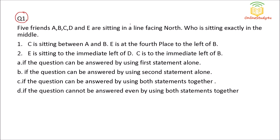Let us start with question number one, which is from reasoning. This question is from the topic sitting arrangement, and it is in the form of data sufficiency. Five friends A, B, C, D and E are sitting in a line facing north. So if you are facing north, your right will be this side and your left will be this side.